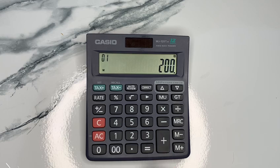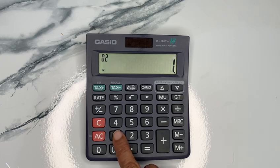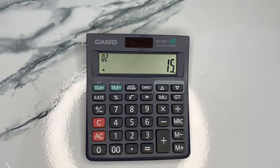First, I enter 200, then press the addition button. My percentage is 15, so I enter 15 and press the percentage button.